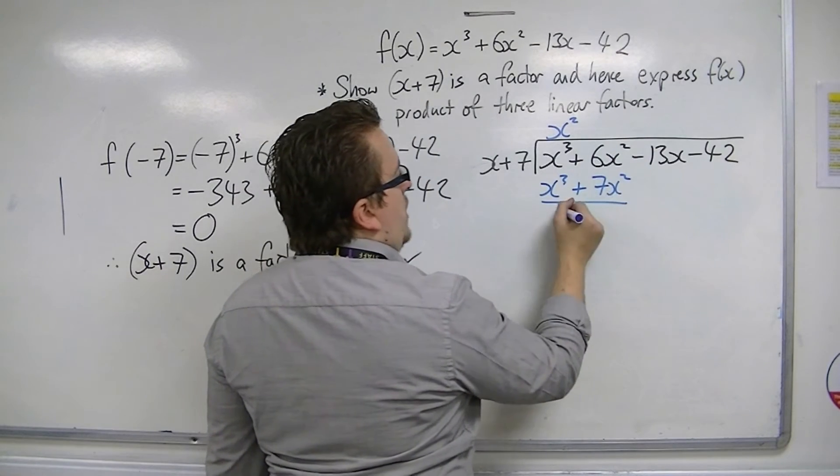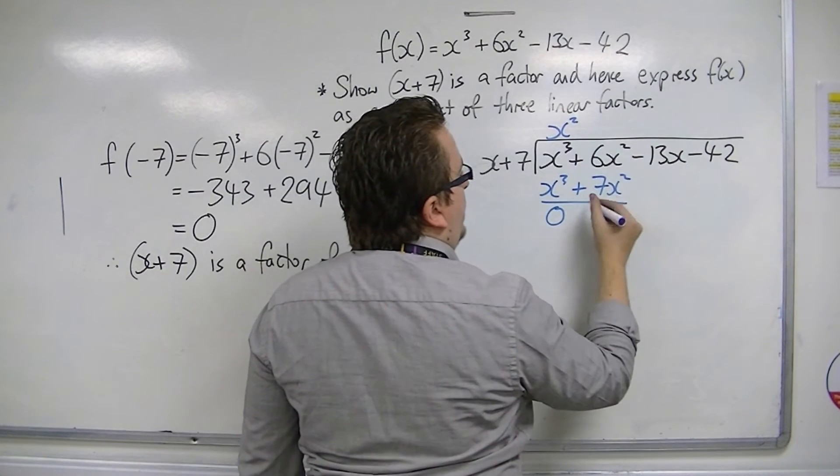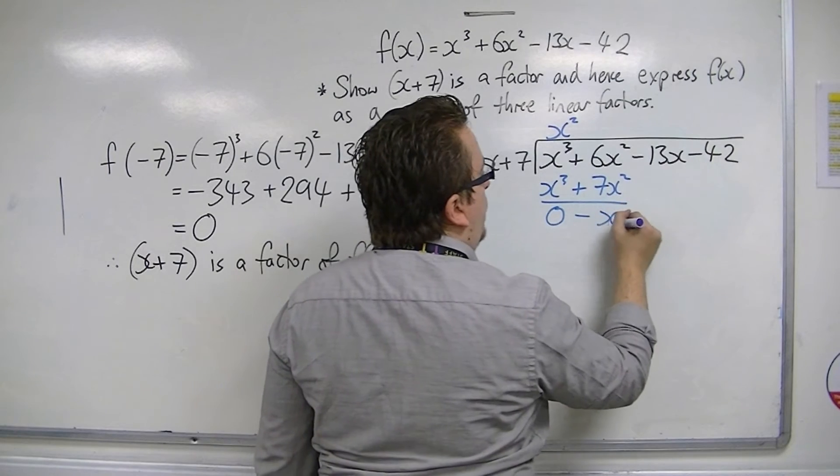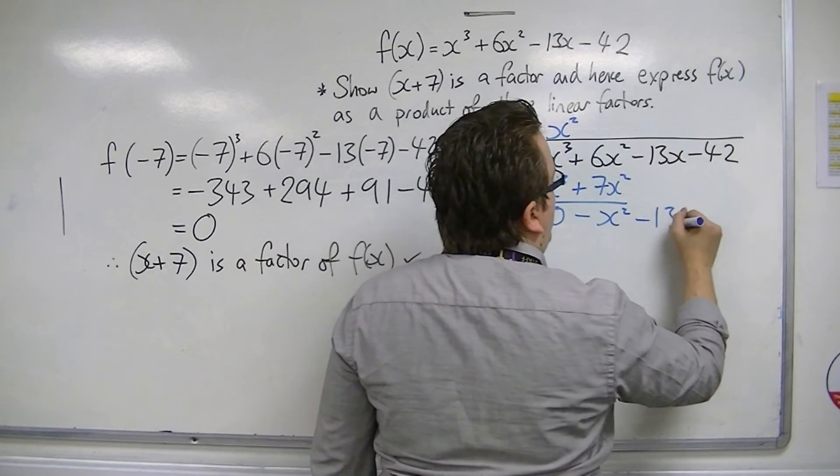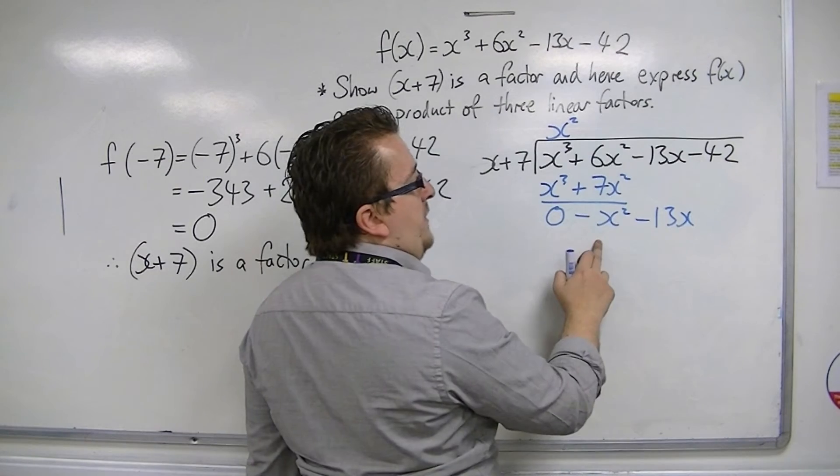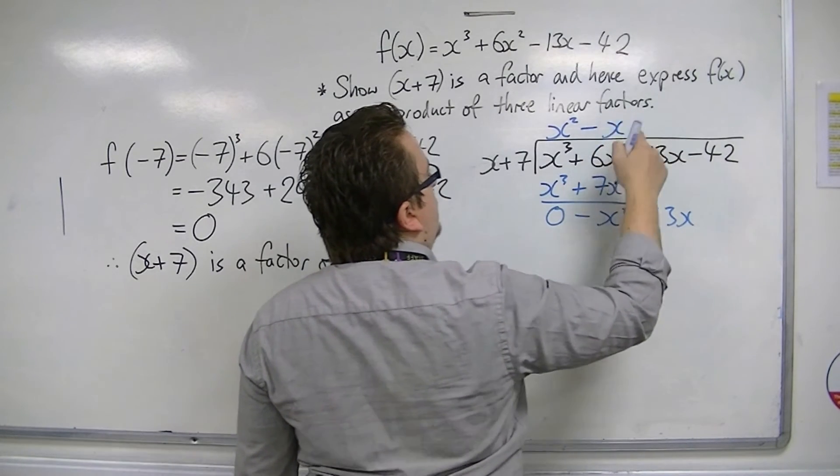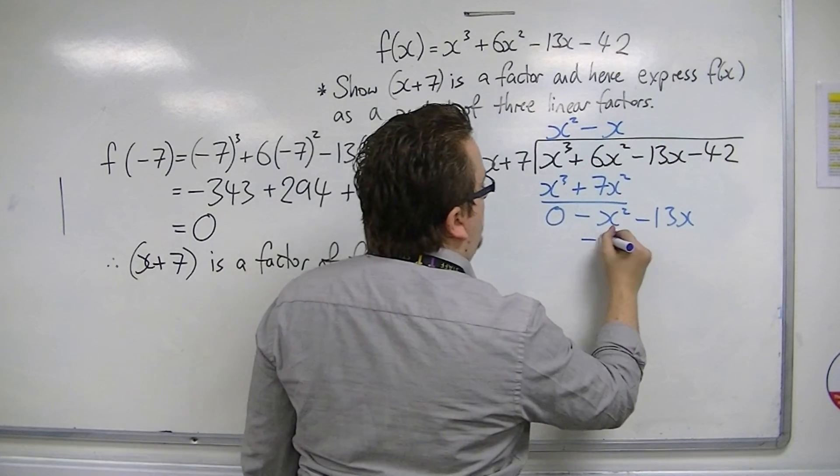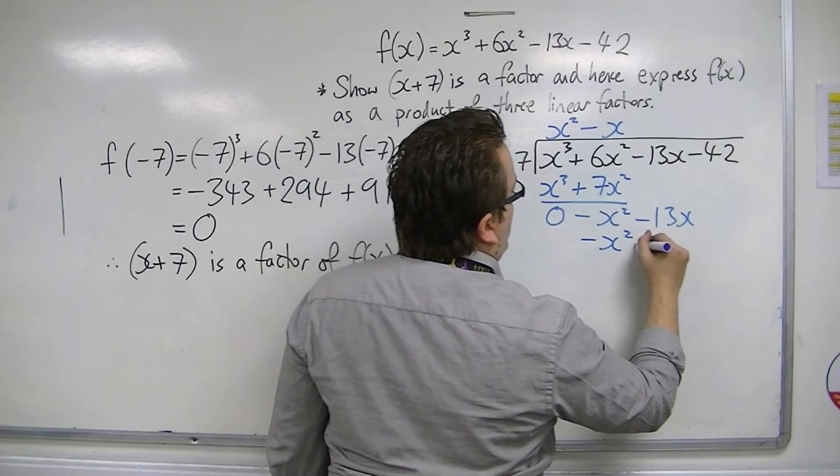Draw a line to perform a subtraction. 6x squared take away 7x squared is minus x squared. Take away 13x, bring that down. x's into minus x squared go minus x. Minus x times these two terms is minus x squared take away 7x.